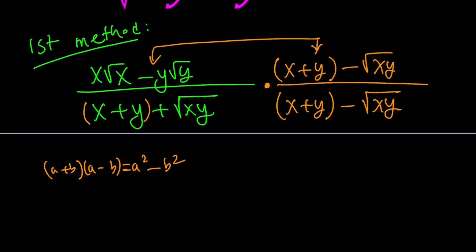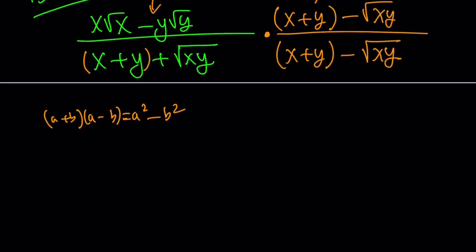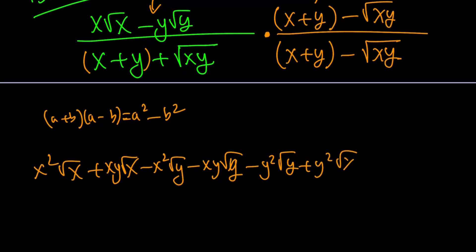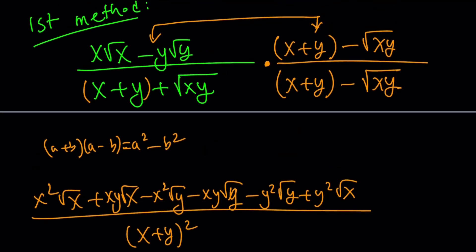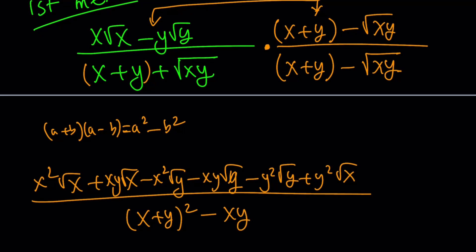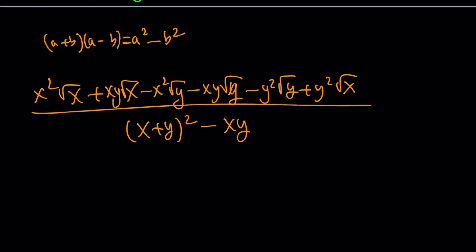If you distribute everything over everything, you're going to get x squared root x plus xy root x minus x squared root y minus xy root y, minus y squared root y, and then finally y squared root x with a plus sign. All of that is divided by x plus y squared minus square root of xy squared, which is just xy. When you square a radical, the radical disappears.